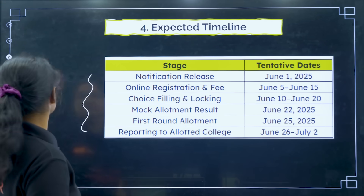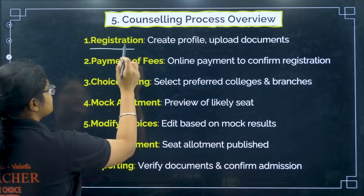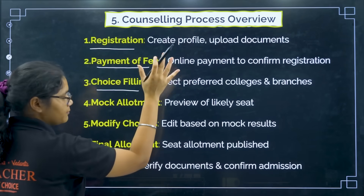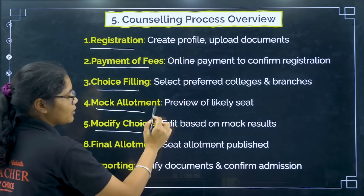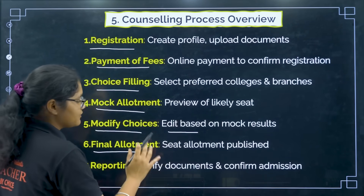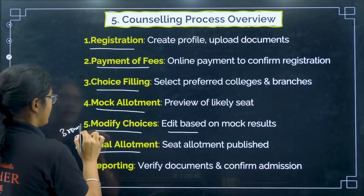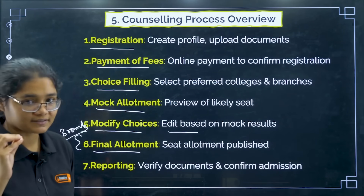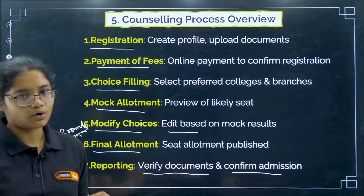For the counselling process overview: first there is registration, then payment of the registration fee, then you put all your choices. Then there will be a mock allotment, and based on that you will be given a chance to edit your choice filling. Once you edit, you will have the final allotment. This final allotment takes place in three rounds. Once you get your desired college or are satisfied with the allotted college, you go to verify documents and complete admission to the college.